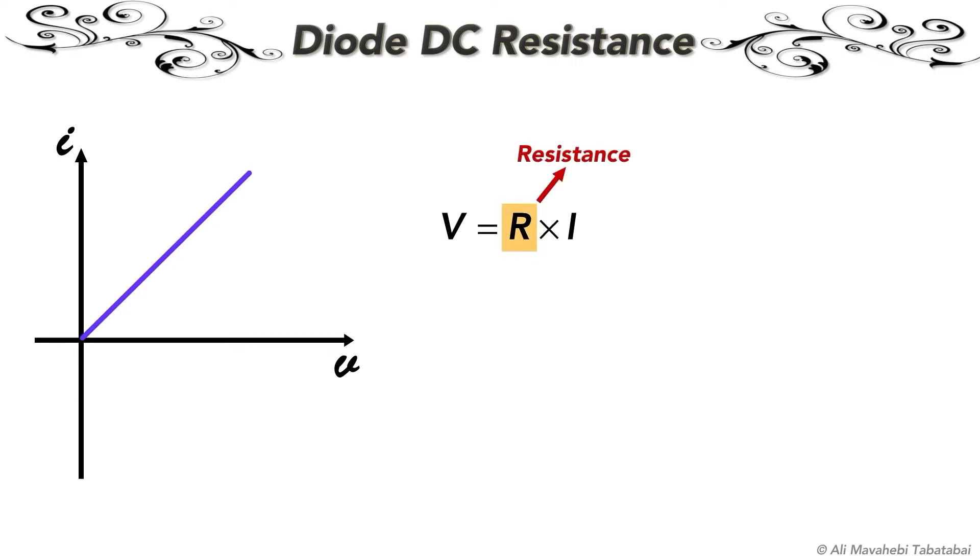Similarly, I can say I equals a constant times V, and this constant is called 1 over resistance or conductance. From this graph, you see that the slope of this line is conductance and 1 over slope of the line is resistance.